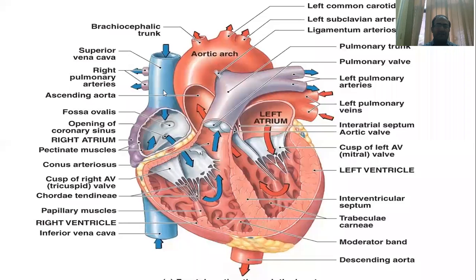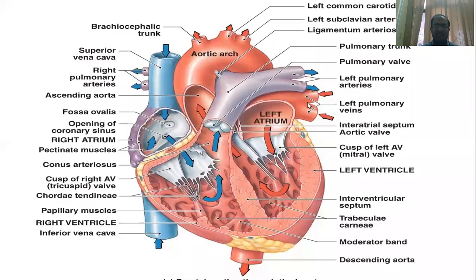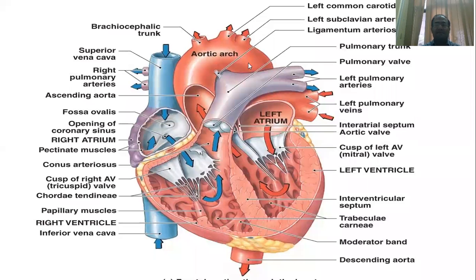The circulation of the heart: blood from the inferior vena cava enters the right atrium, then the right ventricle, then the common pulmonary trunk, and goes to the right and left lungs. From the right and left lungs, blood comes back through the right and left pulmonary veins into the left atrium. The oxygenated blood is sent to the left atrium and left ventricle. The left ventricle then supplies blood to the body.